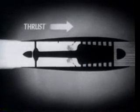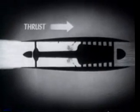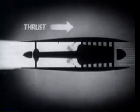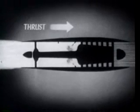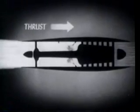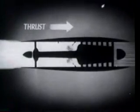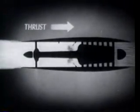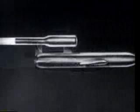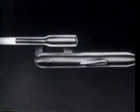This cycle is continuous: intake, compression, fuel injection, ignition, expansion, and exhaust. The turbojet is intended, at present, for missiles operating at subsonic speeds. Also intended for subsonic speeds is another type of air-breathing engine — the pulsejet engine.